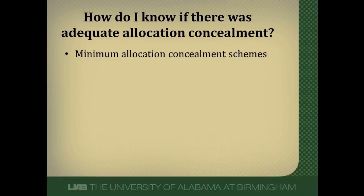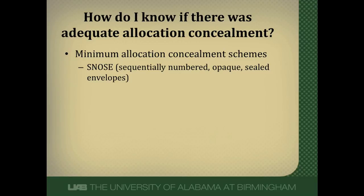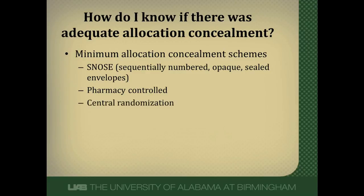How do you know if there's adequate allocation concealment? There are certain things you can look for. One is sequentially numbered opaque sealed envelopes — the envelopes all have a number, and when the next patient comes up you grab the next numbered envelope. It's opaque so you can't see through it, and sealed so you can't open it prior to enrolling the patient. Often pharmacies will control randomization — once you enroll a patient, you call the pharmacy and they disclose the randomization for that individual. Probably most commonly, you call into a central randomization center and they tell you which arm of the trial your patient is randomized to. Use your clinical judgment — does it look like the randomization scheme could be broken? If not, you can be assured that adequate concealed randomization was probably done.